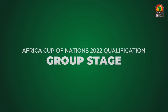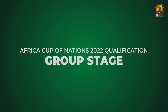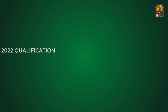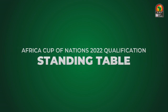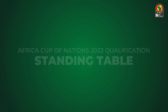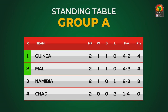The following table and standings of Africa Cup of Nations 2022 qualification, group stage phase. In group A, the top of the table is Guinea, followed by Mali in second, Namibia and Chad below it.